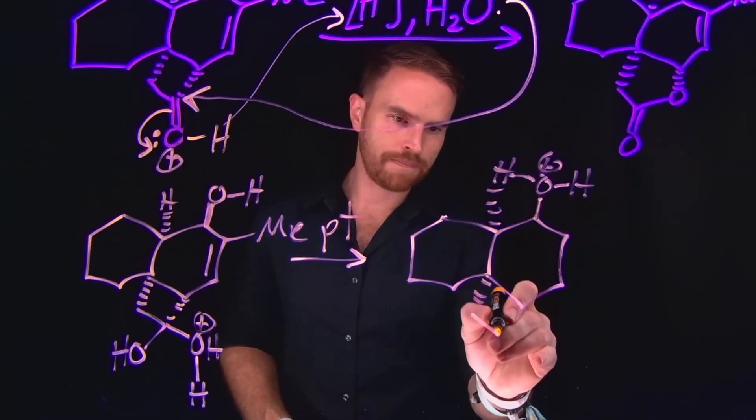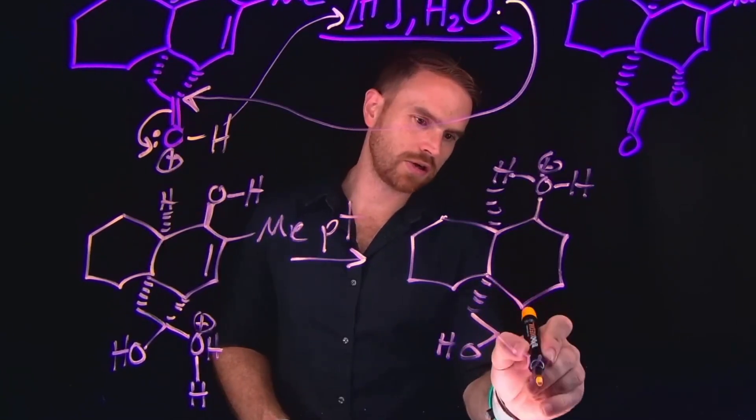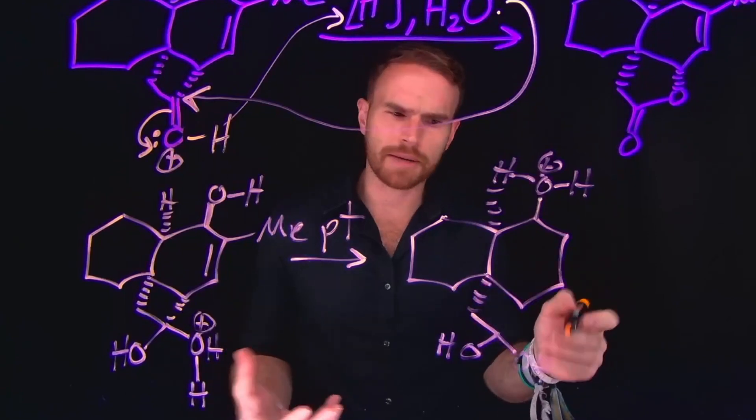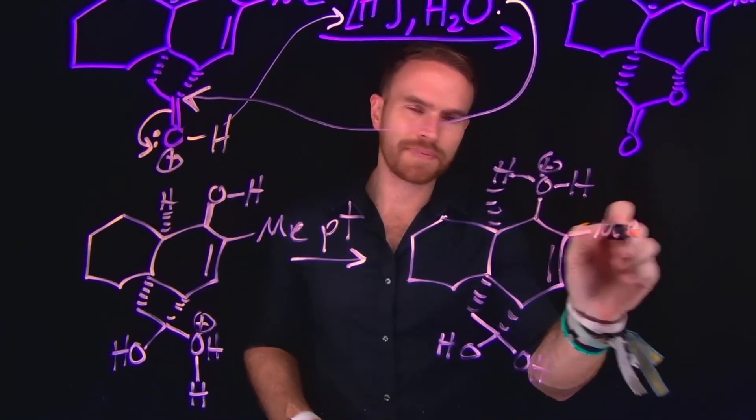So now that we have done that proton transfer, what remains is two alcohols here, which we call an acetal functional group. It's very common in protecting group chemistry, and that gives us our next step in our mechanism.